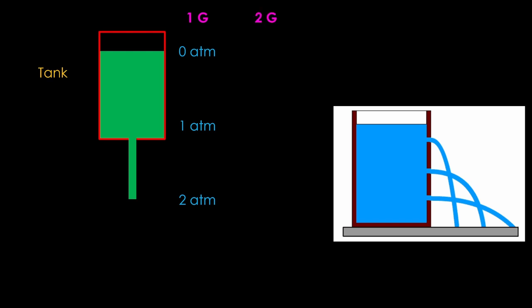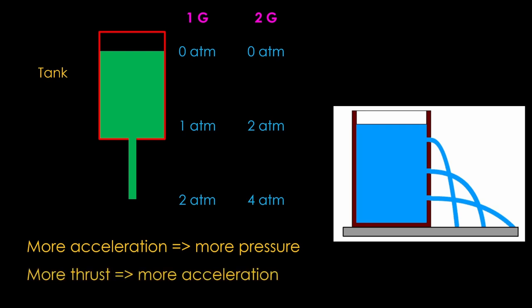If the rocket is accelerating upwards at 1g, the total acceleration will be 2g, and that will double the pressure. Or, to generalize, more acceleration in the rocket will lead to more pressure. How would we get more acceleration? We would get it if the engine thrust increased.